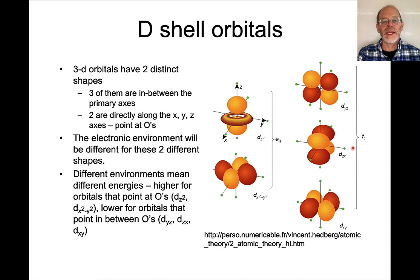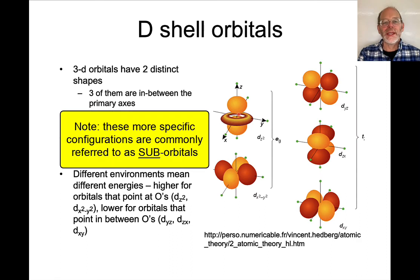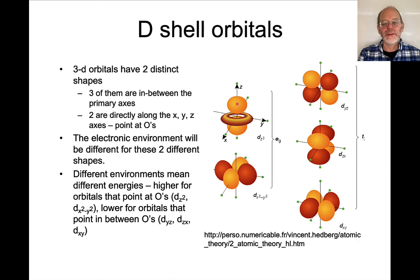Now, the 3D orbitals have two distinct shapes. In two of these orbitals, electrons point in the direction of the primary axes, and in the other three orbitals, the electrons point in between the axes.